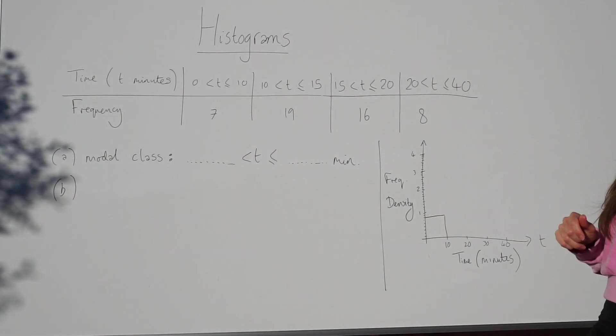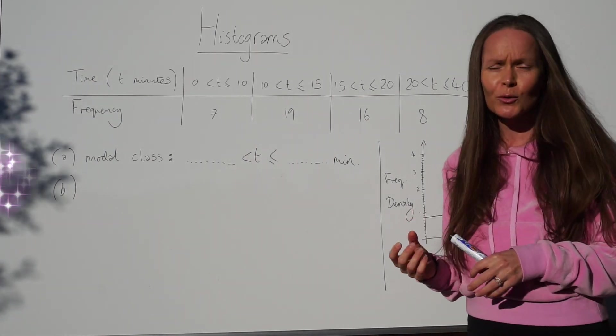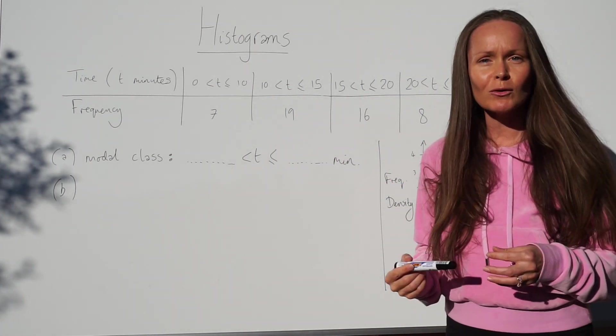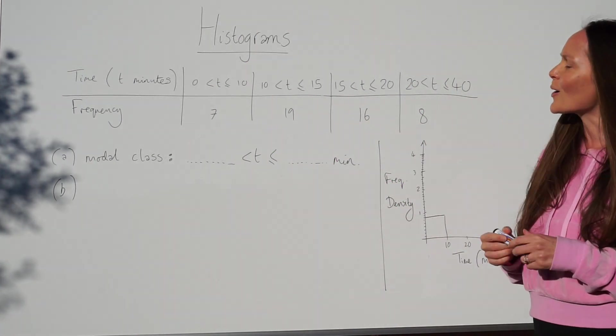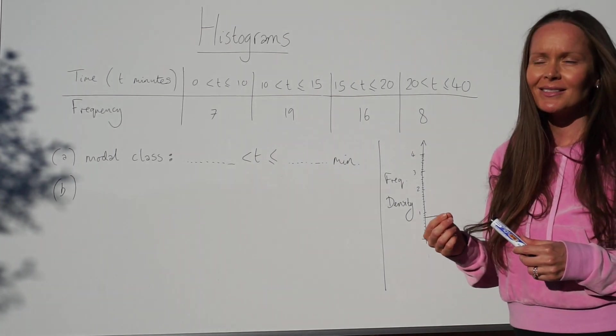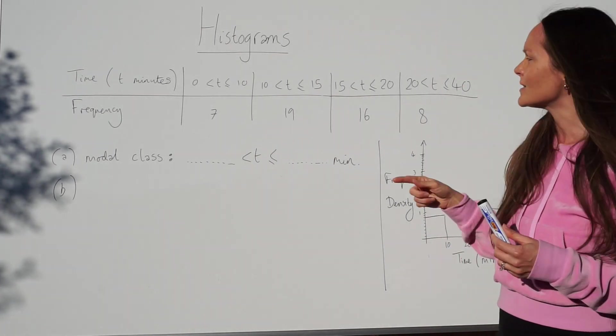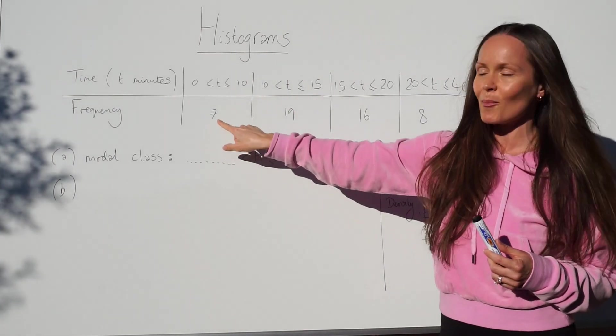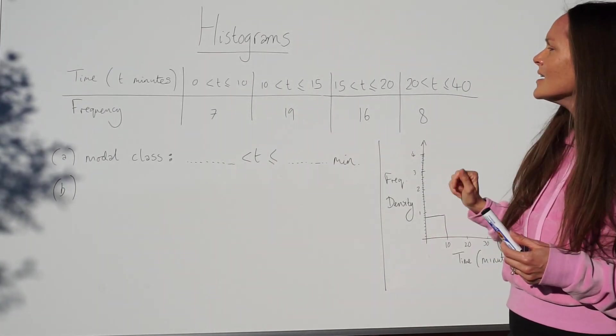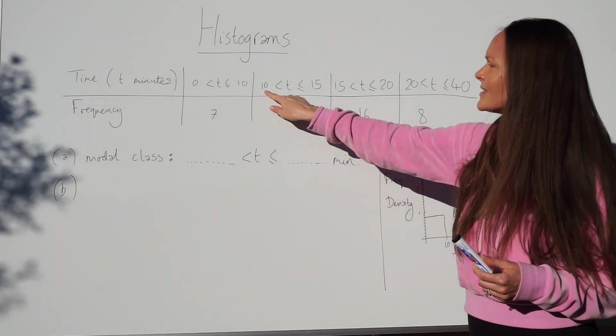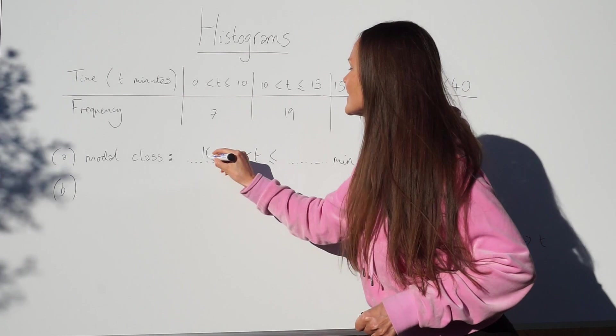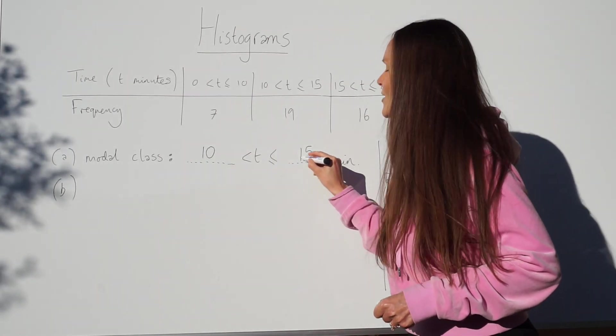For the first part A it asks for the modal class. Modal just means the same as mode, so the most frequent. The one that's the most frequent is the one with the highest frequency. So here's the highest frequency - nineteen is the largest number out of these. So the modal class is this one. Most of the students take between ten and fifteen minutes to get to school.